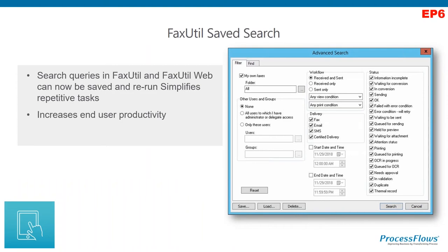One change that happened on Feature Pack 3 of 10.6 was that in FaxUtil you couldn't see all your faxes — it split them by pages, up to 250 faxes per view. EP2 introduced the ability to search, but it was still a manual process. EP6 has not only improved the way you can search but also allows you to save your searches. If you regularly do the same search, it will be retained. For users handling very large mailboxes, this is a really critical enhancement. It works for both filters and search.